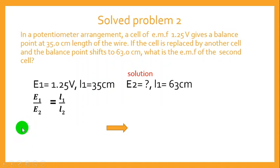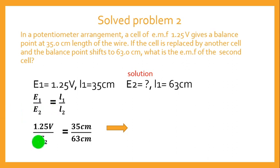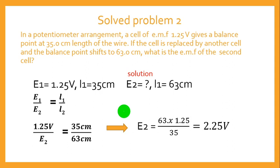Using the formula E1 over E2 equals L1 over L2, we substitute: 1.25 over E2 equals 35 over 63. There is no need to convert centimeters to meters because the units cancel. Making E2 the subject: E2 equals 63 multiplied by 1.25 divided by 35, which gives 2.25 volts.